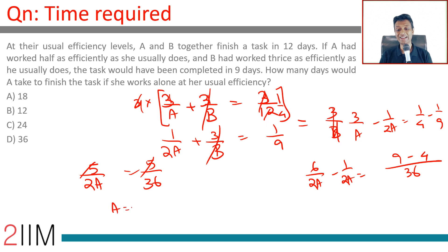2a is 36, or a is 18. A alone at usual efficiency will take 18 days to finish the task.